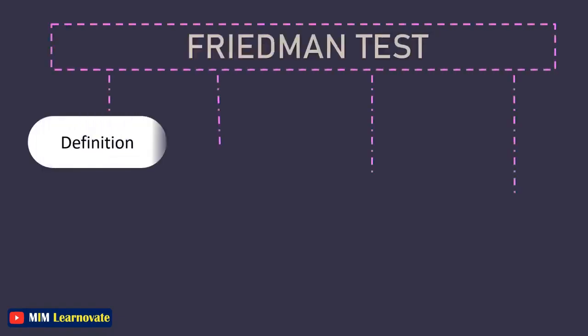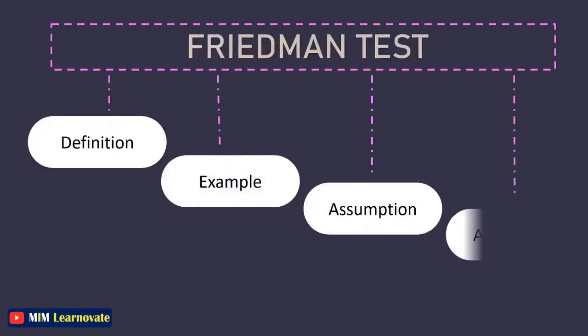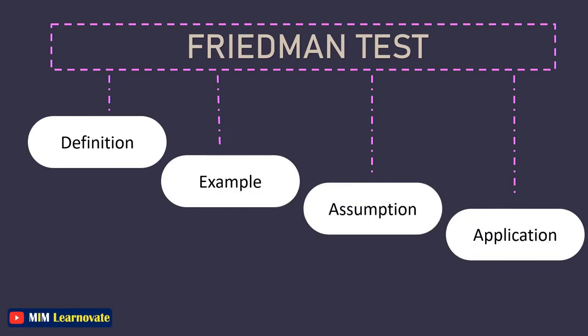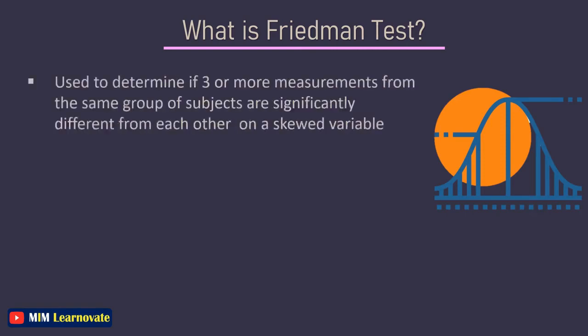The Freedman Test is a statistical test used to determine if three or more measurements of the same group of subjects are significantly different from each other on a skewed variable of interest.